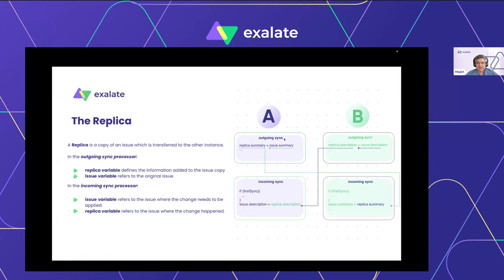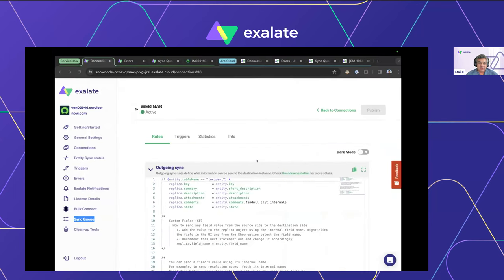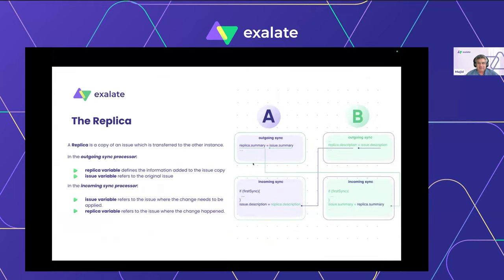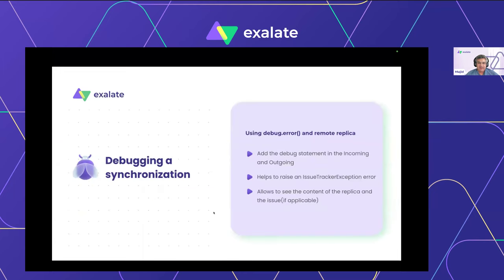You have two systems — ServiceNow and Jira. Each side has an outgoing and incoming script. The outgoing script picks up lots of data points from your entity (the incident) and packages them into a data structure called the replica. The replica gets sent to the other system. The incoming sync then references stuff from within the replica, picking out data and assigning it to your local ticket object.